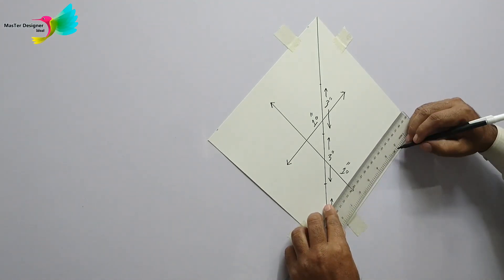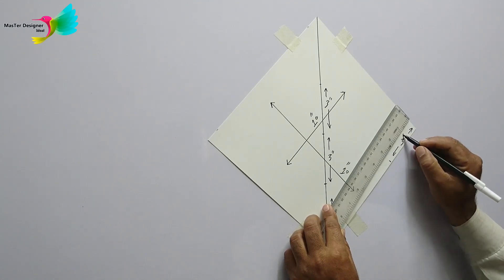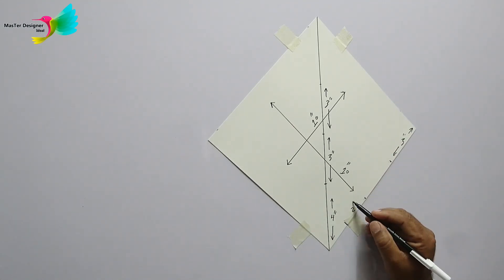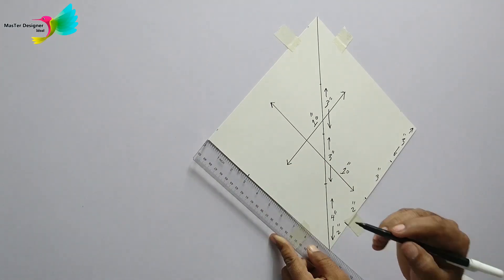Now break the borders of the diamond in four parts, two in three inches, other two in two inches. Do the same on opposite side.